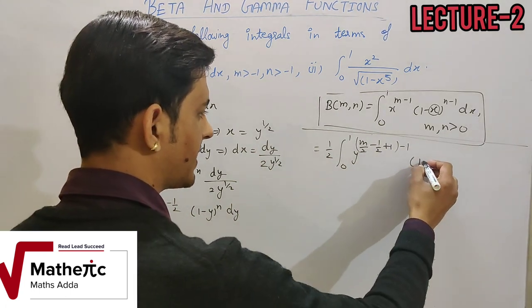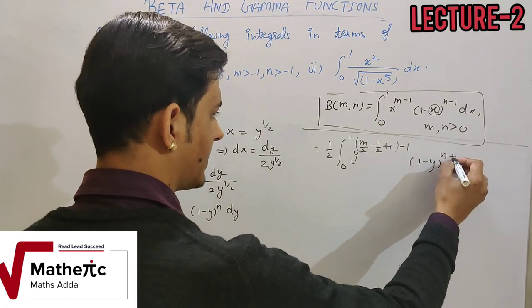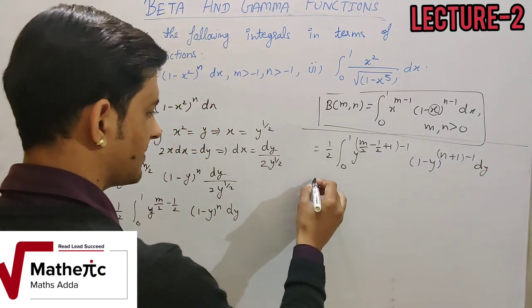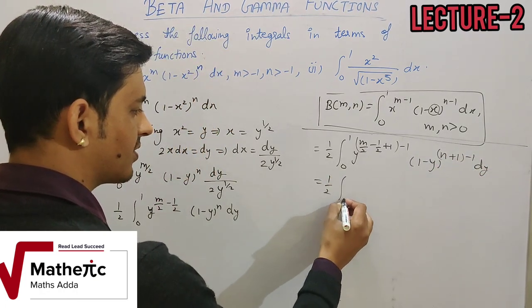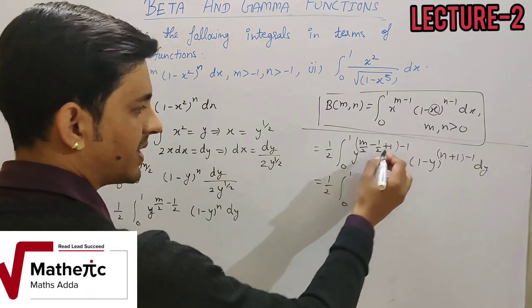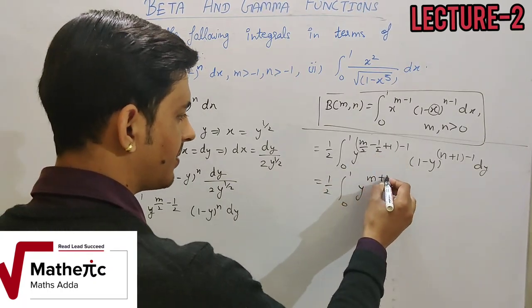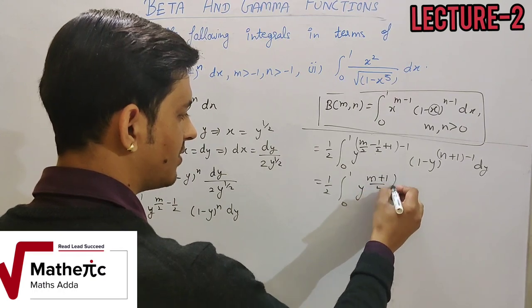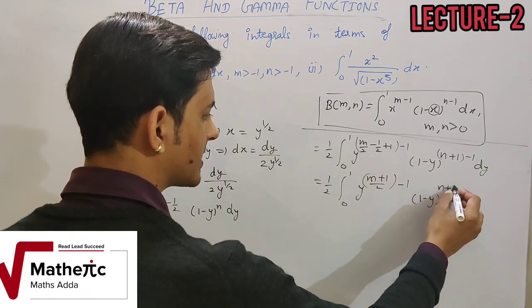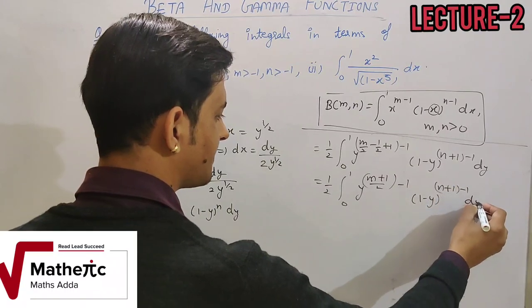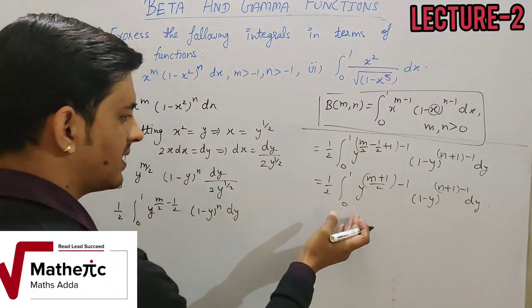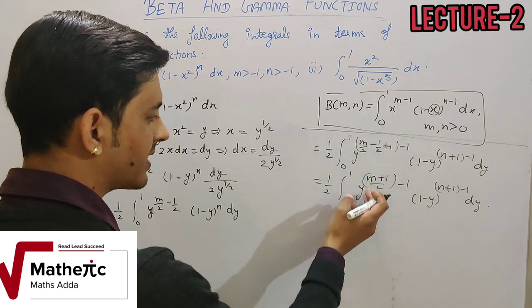So the integral becomes (1/2) · ∫₀¹ y^((m+1)/2 - 1) · (1-y)^(n+1 - 1) dy. Adding 1 to (m/2 - 1/2) gives (m+1)/2, and we subtract 1 to maintain balance. Similarly for the second term: n becomes n+1 and we subtract 1.